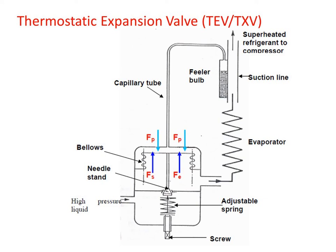The various parts of the thermostatic expansion valve are: capillary tube, feeler bulb, suction line, superheated refrigerant outlet to the compressor, adjustable spring, screw, bellows, and needle seat. High pressure liquid enters from one side and refrigerant is fed to the evaporator and then to the suction line. Any change in degree of superheat of suction gas alters the valve position. If the degree of superheat is less than 5°C, the sum of evaporator and spring pressure exceeds the pressure exerted by the bulb, tending to close the valve and throttle flow to the evaporator until the desired degree of superheat is obtained.